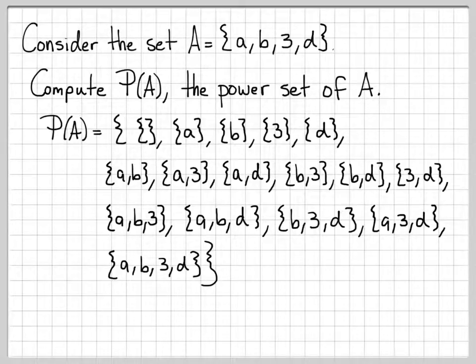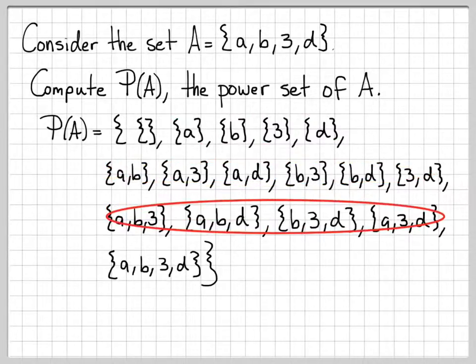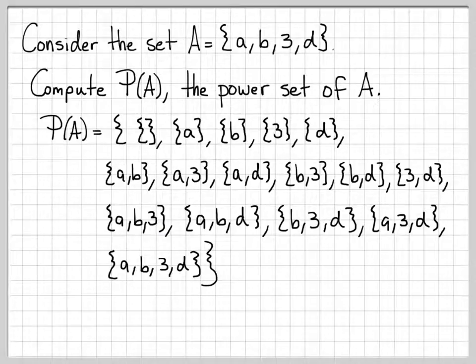So the power set contains a lot more things than the original thing. And the easiest way to write all this down is to start with the empty set and with the set A. So that's one thing to check is A is always in it as well. And then in between, fill in all the ways that you can choose one, all the ways you can choose two, and all the ways that you can choose three. For this particular example, that's where we stop.